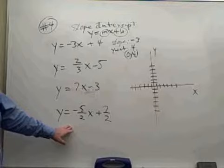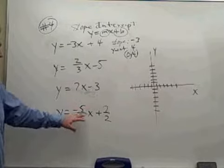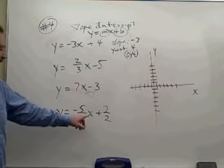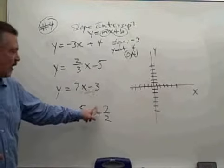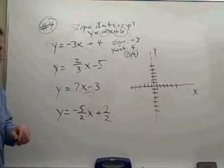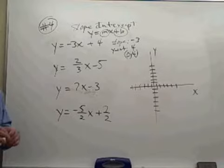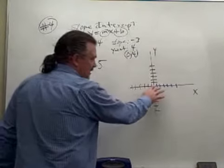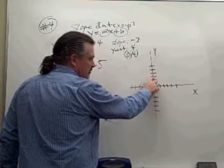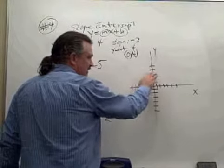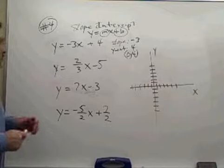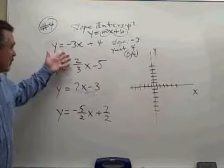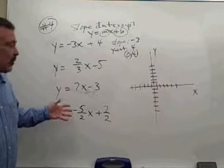And finally, this equation in slope-intercept form tells us that the slope would be negative five halves, and the y-intercept would be seven halves. Seven halves is three and a half, so the y-intercept would be up here at approximately three and a half, which is where the line would cross the y-axis. We can learn that kind of information from the equation when it is in slope-intercept form.